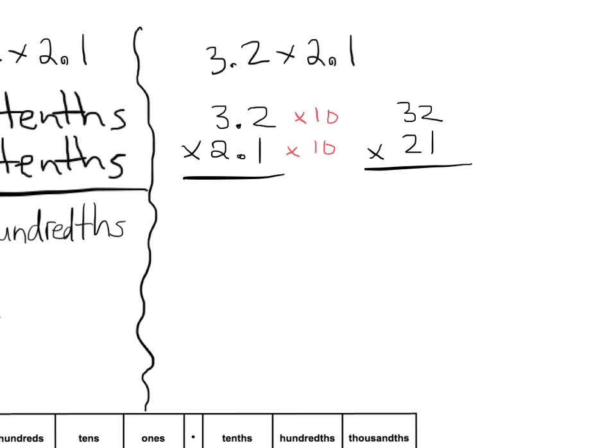All right. So now, instead of multiplying over here, I'm going to multiply over here. So I've got 32 times 21, and I'll save you the trouble of seeing that again, but we already know it's 672. But we need to compensate for the fact that we multiplied by 10, and we multiplied by 10. So what we need to do to fix our answer is, well, we need to divide by 10. Well, that gives us 67.2, but now we've got to divide by 10 again, and that gives us 6.72.